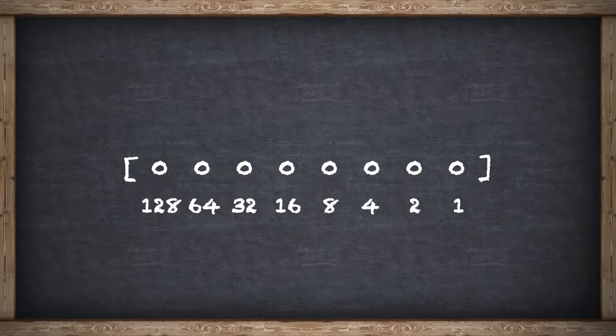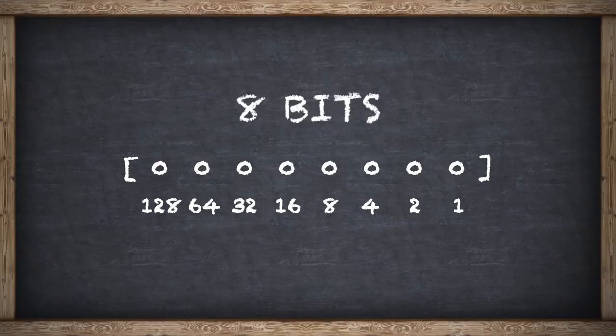For a computer, this is known as 8 bits. A single bit is a single column in binary counting. 8 bits equals 1 byte.